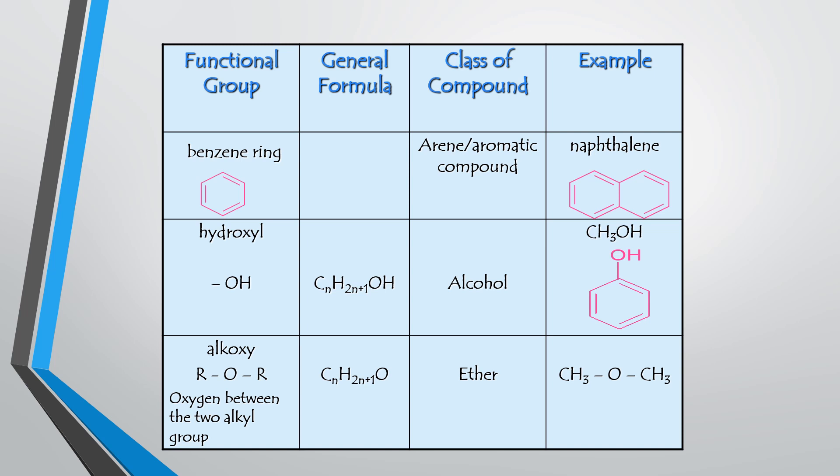The next functional group is alkoxyl. Alkoxyl consists of two alkyl groups with an oxygen atom located between them. The name comes from the terms alkyl and oxygen. The general formula is CnH2n+2O, and it belongs to the class of compound called ether.